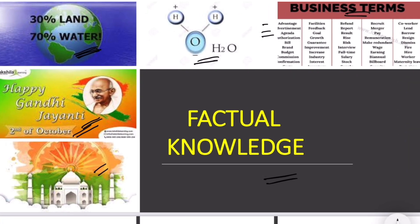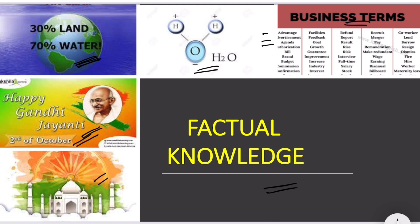Examples of knowledge of terminology include subject specific words like business terms: advantage, advertisement, agenda, bill, brand. Knowledge of specific details includes facts like the formula of water is H2O, or the earth is made up of 30 percent land and 70 percent water. Knowledge of dates includes Gandhi's birthday on 2nd October, Independence Day on August 15th. All these form the information needed to understand a topic.